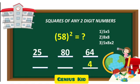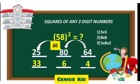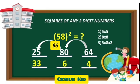Let's apply carry over. Splitting 64, 4 will remain and 6 will be added to 80 to make it 86. Splitting 86, 6 will remain and 8 will be added to 25 to make 33. So, the answer for 58 square is 3,364.